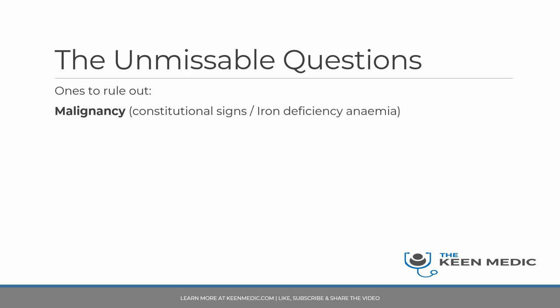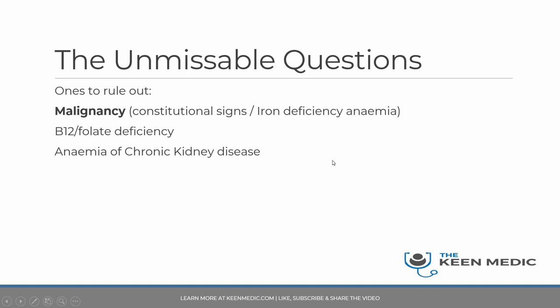But malignancy isn't the only one you need to be ruling out — there are other things to think about that will also lead to anemia. These are things like B12 and folate deficiency — a simple blood test which can easily be corrected. So you always have to think about this. Anemia of chronic kidney disease: as I said earlier, if a patient has had declining hemoglobin for a number of months to years, it may well be because of chronic kidney disease, in which case you need to look at their ferritin levels and probably even think about erythropoietin and referral to the renal doctors.